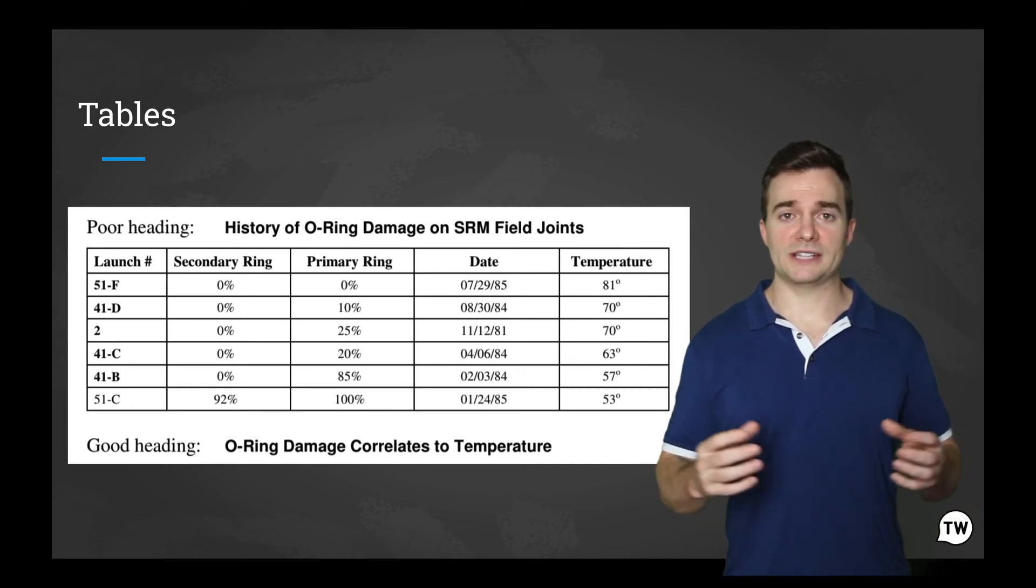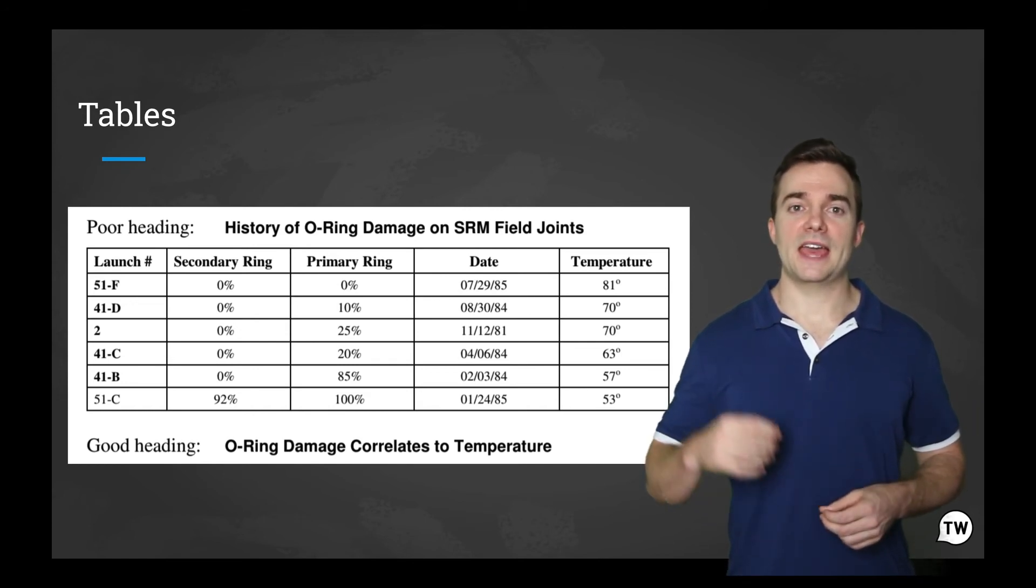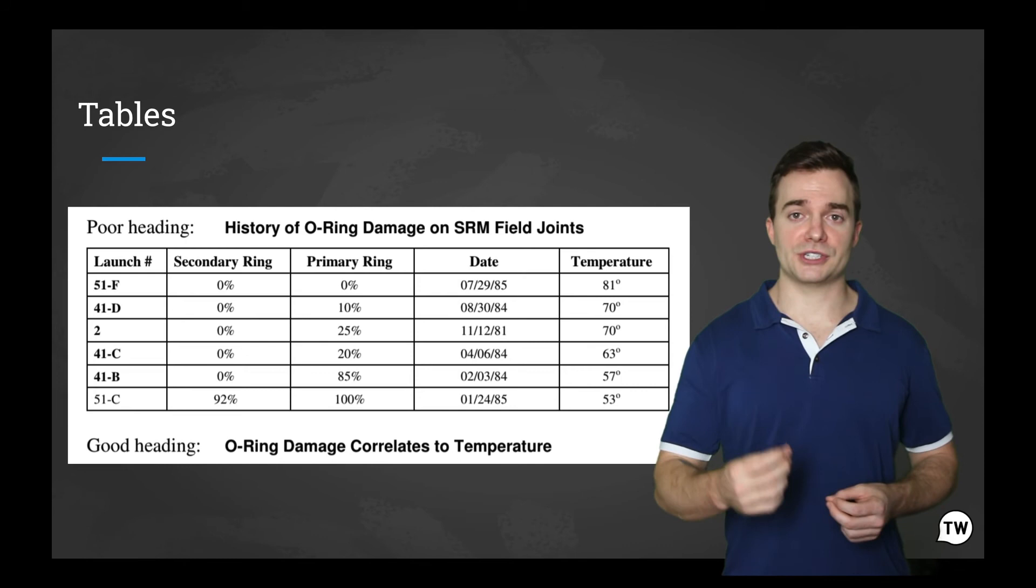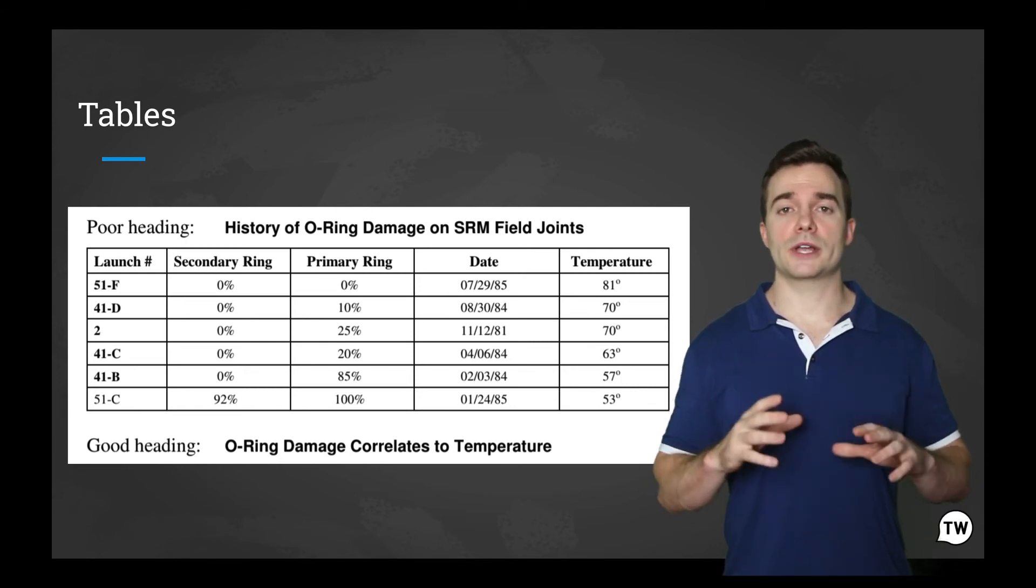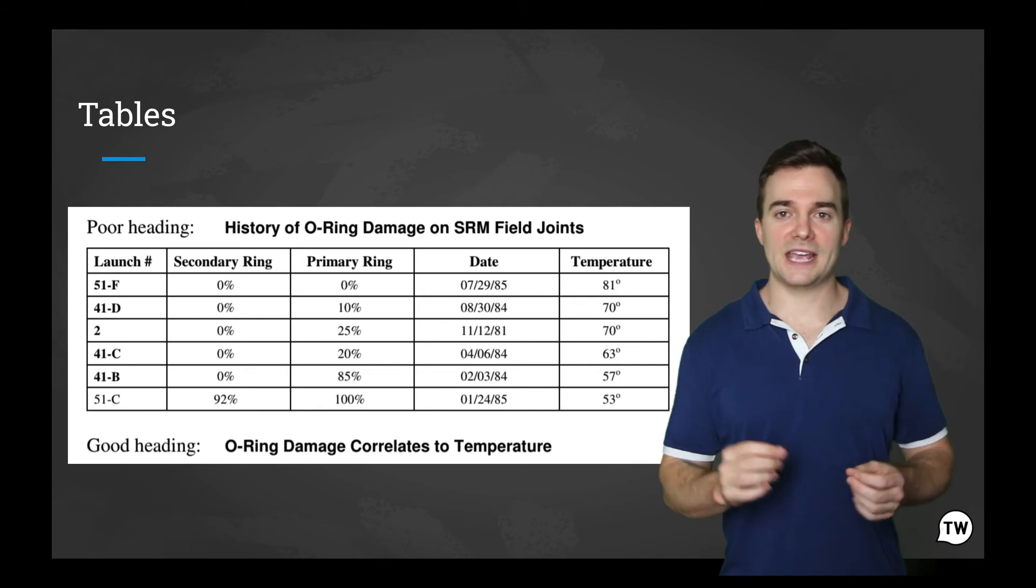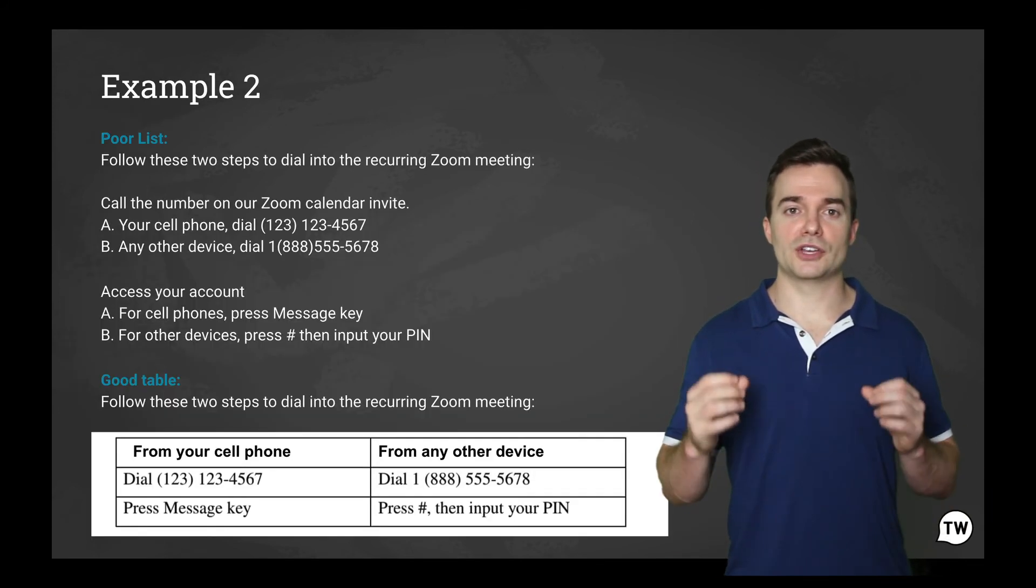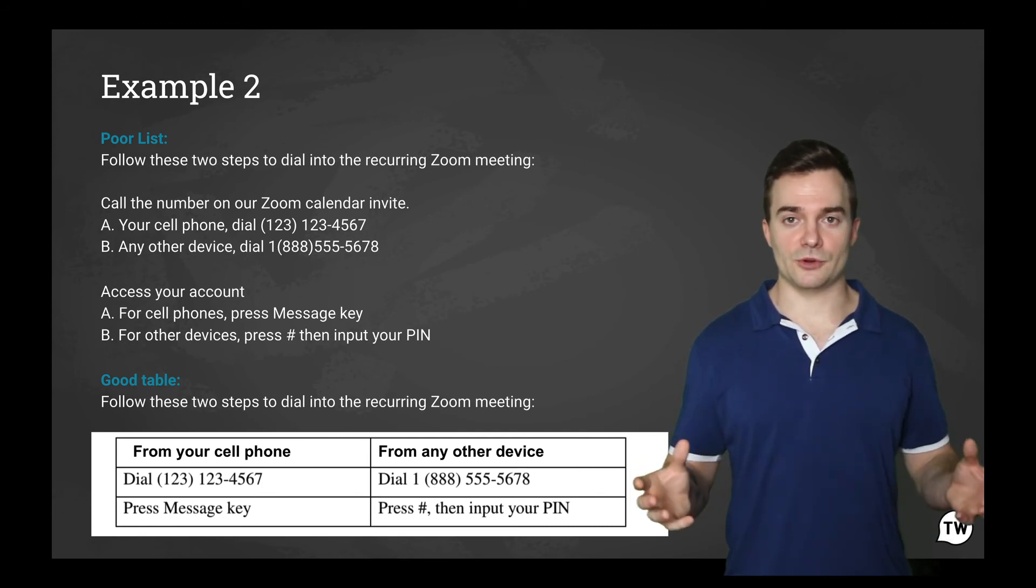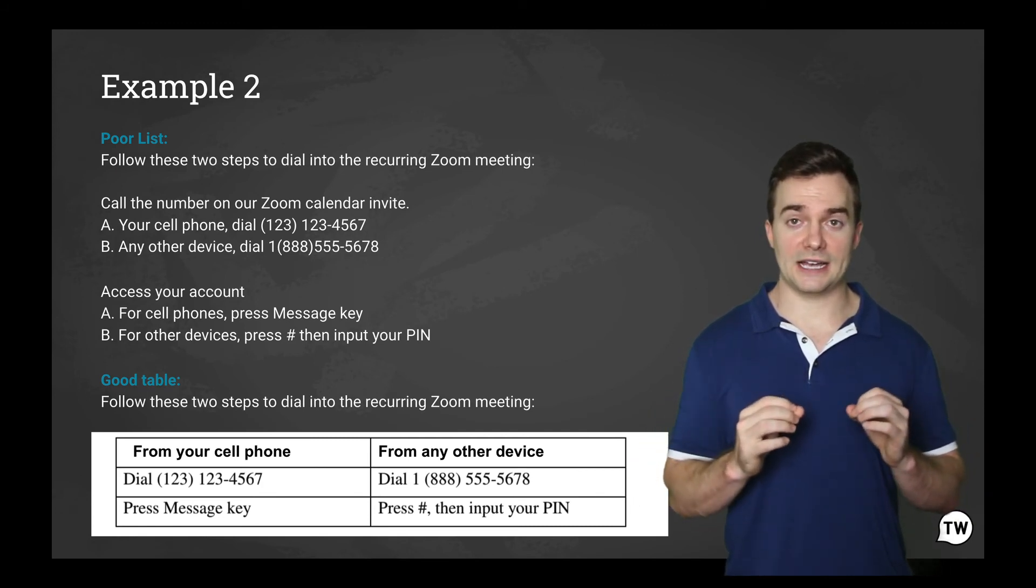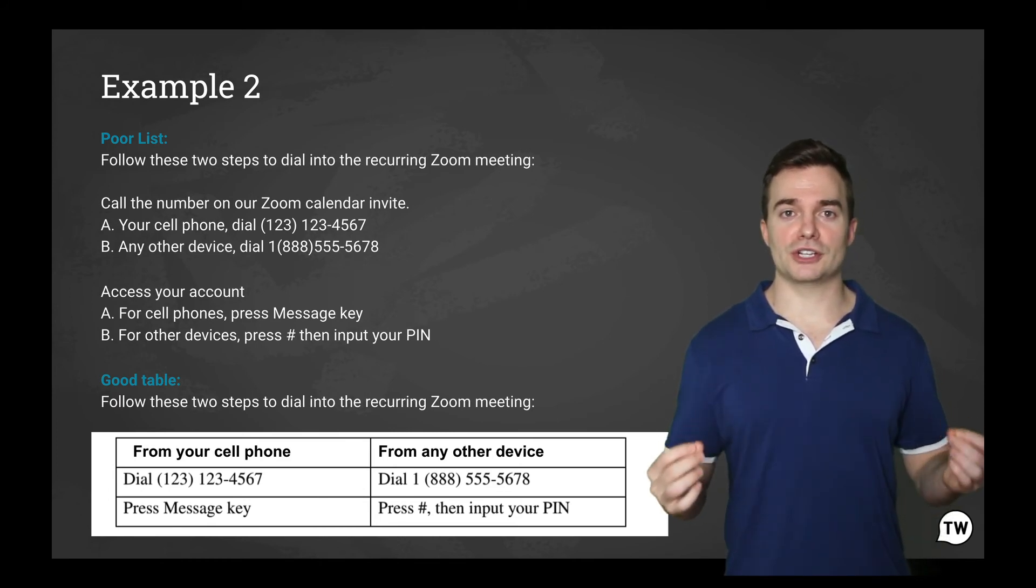So introduce your tables by telling the reader the point, what the table does for them. If the table shows some relationship, explicitly tell the reader the relationship to look for. Just a quick warning here. Do not use tables that lack a point though. Never dump a table of data on the reader without telling the point. Here's an example of a good use of tables to make a list more digestible. In order to understand it, let's take a look at the poor list.